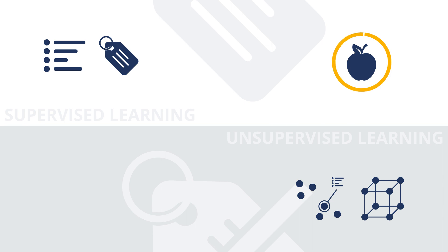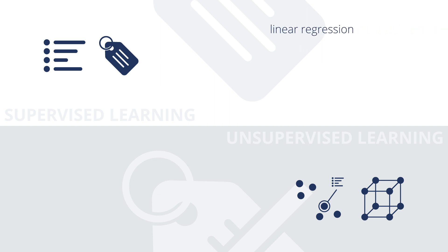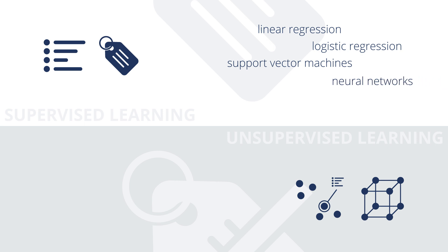In summary, supervised learning models associate a label with each data point described by its features, whereas unsupervised learning models find structures among all the data points. In a sense, supervised learning is similar to learning the names of fruits from a picture book — you associate the characteristics of the fruit (the features) with the names written on the page (the label). Classical examples of supervised learning algorithms are linear regression, logistic regression, support vector machines, neural networks, and so on.